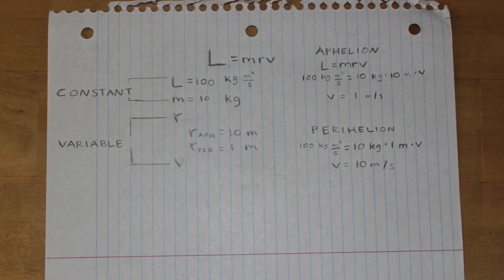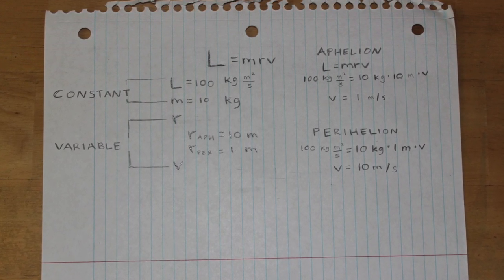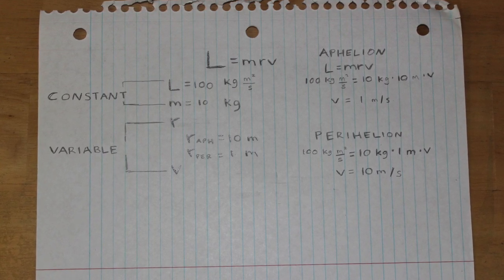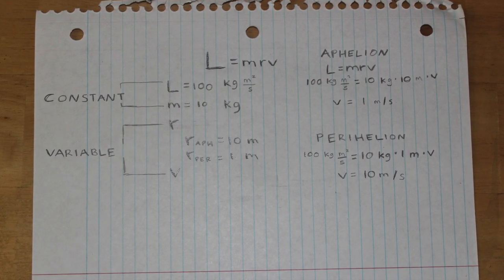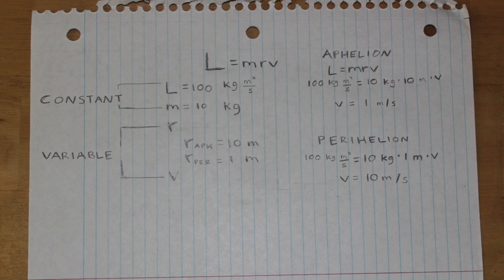So our model shows at perihelion when the planet is closest to the sun, it travels 10 times as fast as it is when it is farther from the sun, that is given our made up distances.